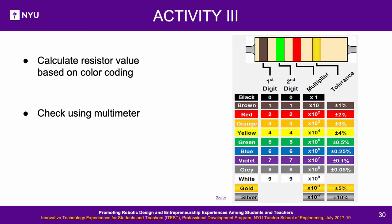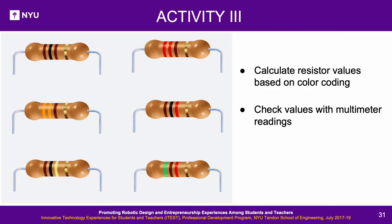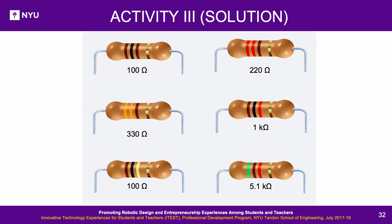Activity 3: Find the resistors from the Elegoo kit using the color codes shown in the slide. Calculate the values using the reference table in the previous slide and verify the values with multimeter readings. Pause the video to do this activity. Solution: These are the actual resistor values from Activity 3 — pause to check your answers and proceed when done.